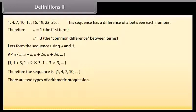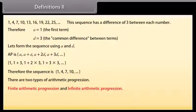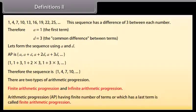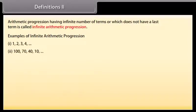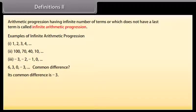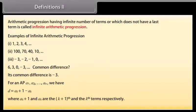There are two types of arithmetic progression: finite arithmetic progression and infinite arithmetic progression. An AP having a finite number of terms, or which has a last term, is called a finite AP. An AP having an infinite number of terms, or which does not have a last term, is called an infinite AP. In general, for an AP a1, a2, ..., an, the common difference d is given by d = a(k+1) minus a(k), where a(k+1) and a(k) are the (k+1)th and kth terms respectively.